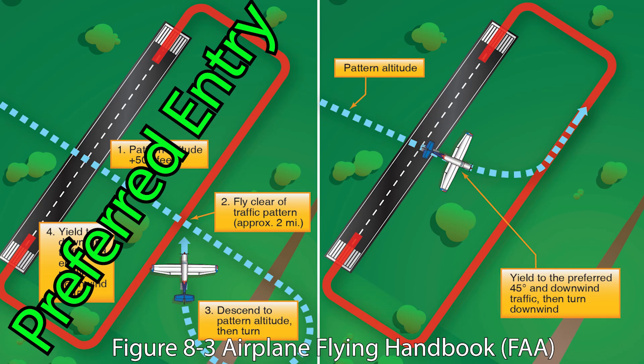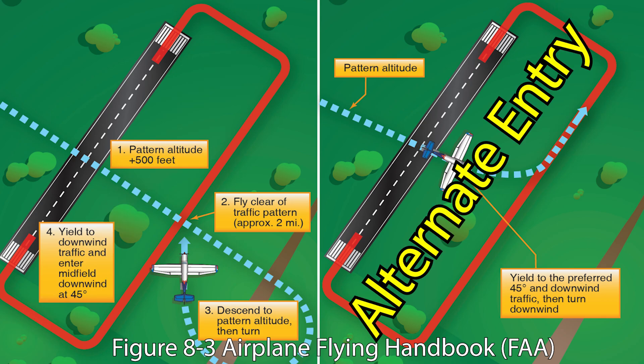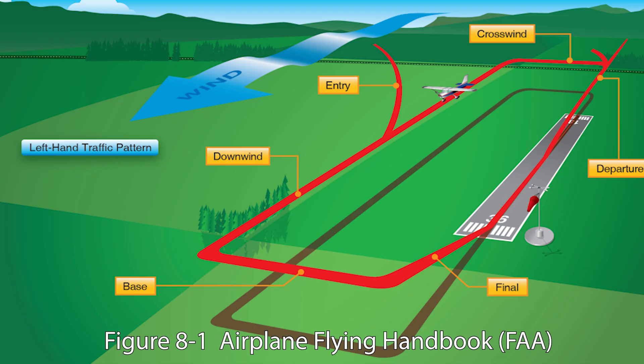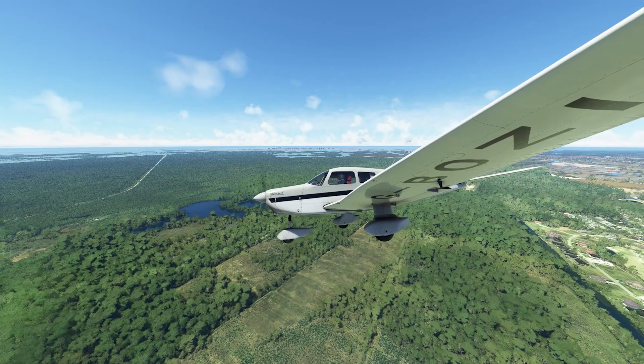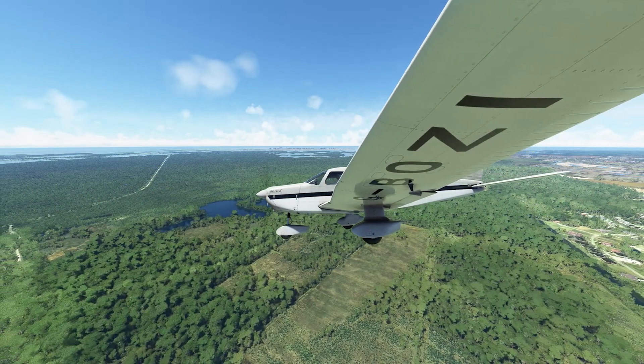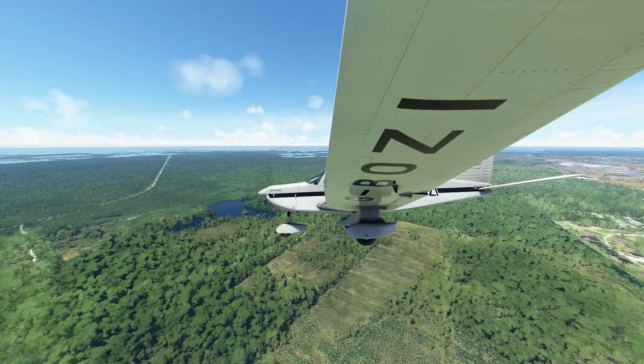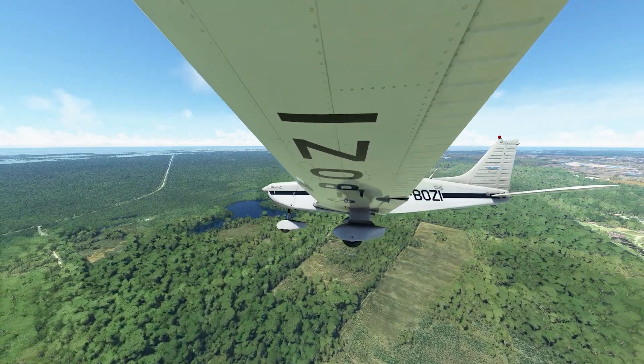In this episode, we're going to talk about airport traffic pattern entries and exits. We'll cover preferred entry methods and alternate entry methods, and why one is green and one is yellow. Because we're talking about getting into the pattern, we also have to talk about exiting the traffic pattern and how to do it properly. Different camera angles will be used throughout the video to help situational awareness.